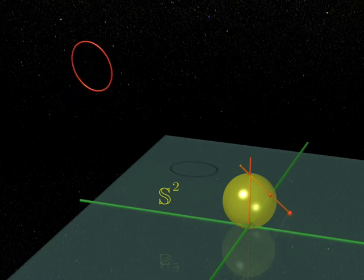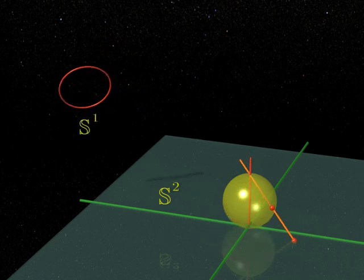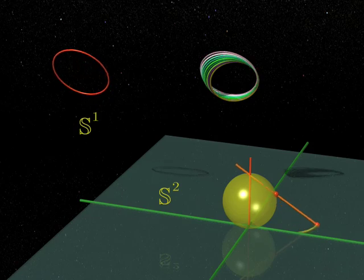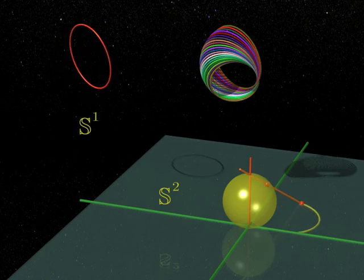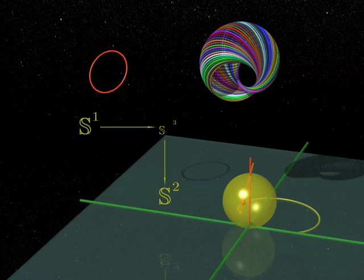So we have a circle for each point on the two-sphere. But a circle is a sphere of dimension one, isn't it? All these circles fill up the three-sphere. Each point on the three-sphere belongs to a single circle, and therefore defines a point on the two-sphere.